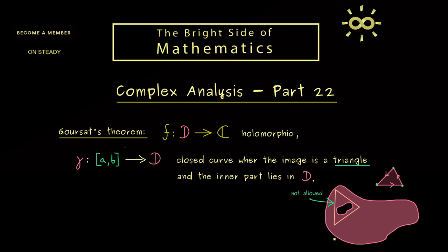The important part is that our triangle curve does not include any hole in D — something like that is not allowed. What we rather want is a triangle like this. These are all the assumptions, and now we can conclude something for the contour integral of f along gamma. More concretely, we conclude that the integral is 0 — the closed curve integral for a holomorphic function is 0 as long as the triangle does not include any singularities of f.